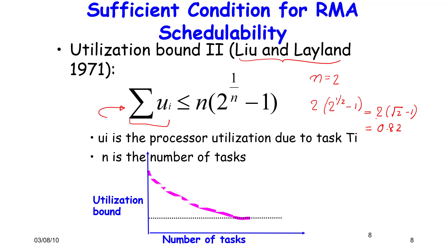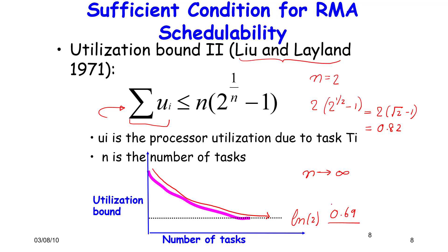If we look at the number of tasks versus the utilization bound, it falls in a curve and gradually saturates. When n tends to infinity, the saturation value is the natural log of 2, which is 0.69. This means that as long as utilization is less than roughly 69%, we are guaranteed RMA scheduling.